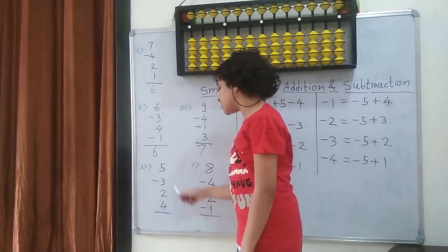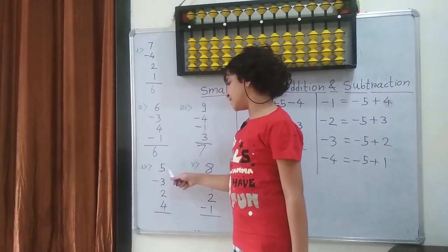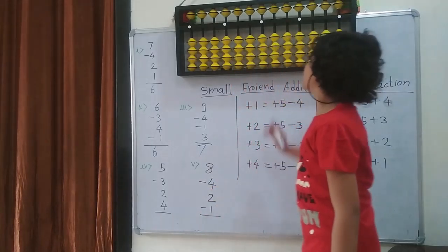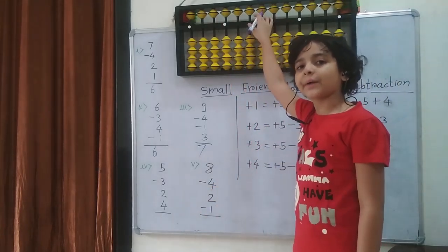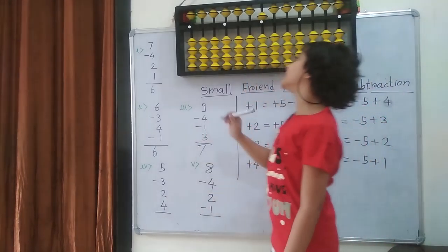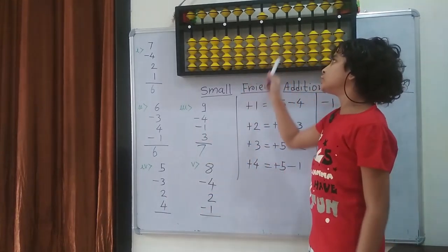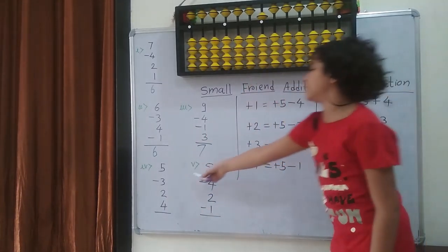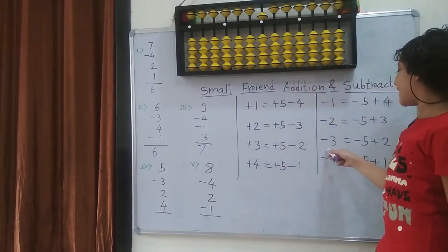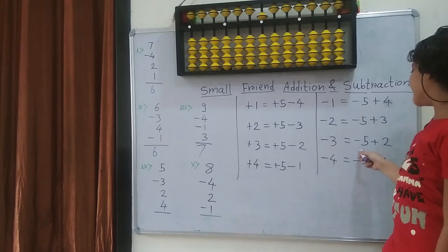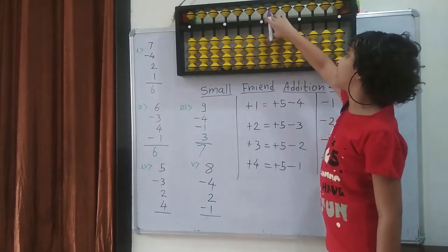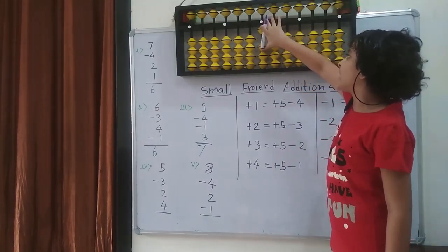Next question: 5 minus 3 plus 2 plus 4. So first on the backwards, I am going to put 5. Then I am going to minus 3. So I cannot, because I don't have any bits — so I am going to use the subtraction formula. Minus 3 equals to minus the 5 plus the 2. So minus the 5 plus the 2. So 1 and 2.